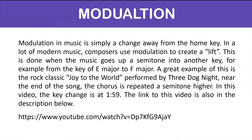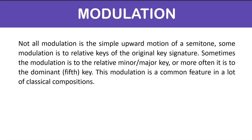Modulation in music is simply a change away from the home key. In a lot of modern music, composers use modulation to create a lift — this is done when the music goes up a semitone into another key, for example from the key of E major to F major. A great example of this is the rock classic 'Joy to the World' performed by Three Dog Night. Near the end of the song, the chorus is repeated a semitone higher, with the key change at 1:59. Not all modulation is a simple upward semitone — some modulation is to the relative keys of the original key signature, or more often to the dominant or fifth key, which is a common feature in a lot of classical compositions.